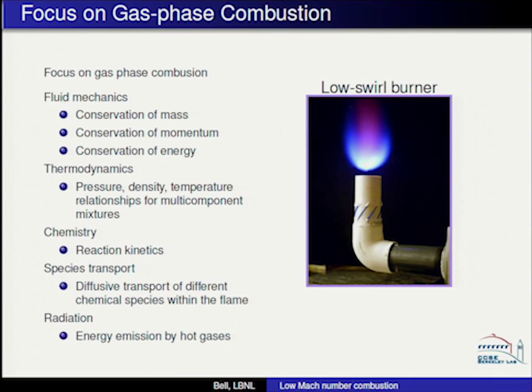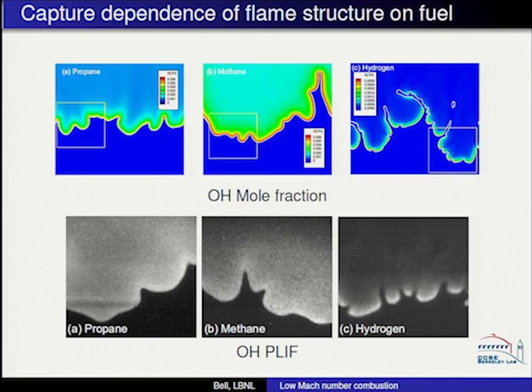We're going to focus on gas phase combustion — no liquid sprays — so it's the usual fluid mechanics. Thermodynamics, chemistry, species, and transport are inputs to the model, as is some kind of radiation. We view the medium as optically thin and radiation is just an energy loss term. What we want to do is simulate with enough detail to understand the internal flame structure and how it responds to different things in the turbulent field. This shows simulated OH profiles for propane, methane, and hydrogen, showing how they respond differently to curvature.